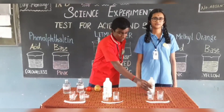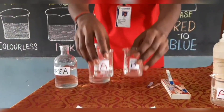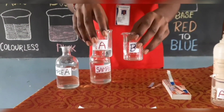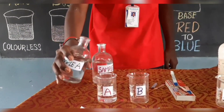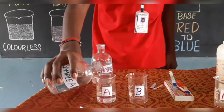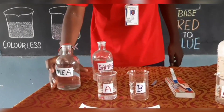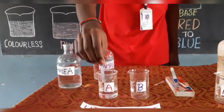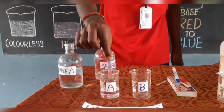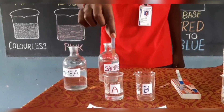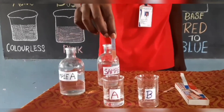First we are going to do the litmus paper test. Take two beakers A and B. In beaker A, take 30 ml of test solution. Dip the blue litmus paper in it. See, it has turned red in color. This indicates the presence of acid.